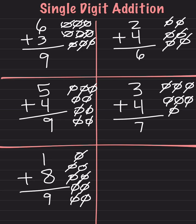We can also do mental math. We start at 1 and we add 8: 1, then 2, 3, 4, 5, 6, 7, 8, 9.